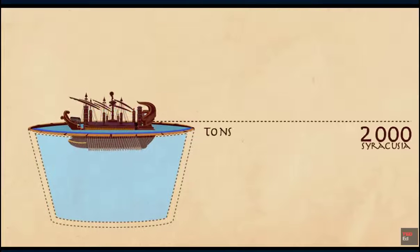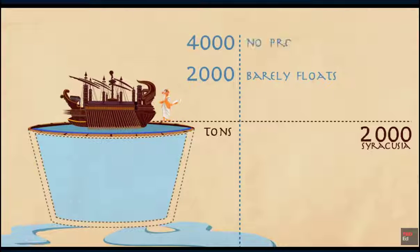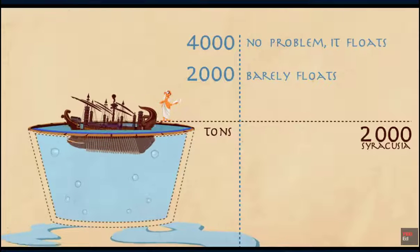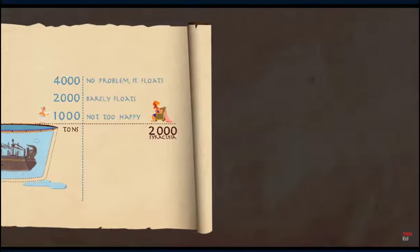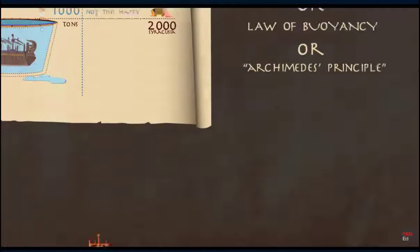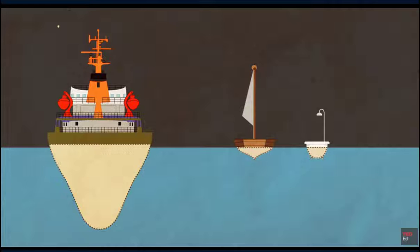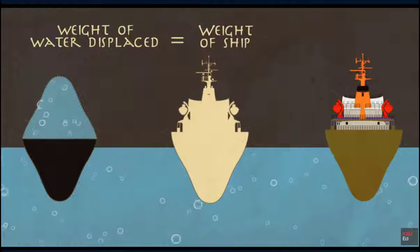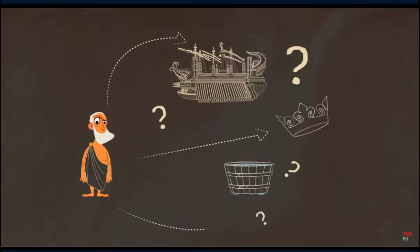In other words, if a 2,000-ton Syracusea displaced exactly 2,000 tons of water it would just barely float; if it displaced 4,000 tons it would float with no problem. This is the law of buoyancy — Archimedes' principle. It explains why a steel supertanker can float as easily as a wooden rowboat: if the weight of water displaced by the vessel below the keel equals the vessel's weight, whatever is above the keel will remain afloat.